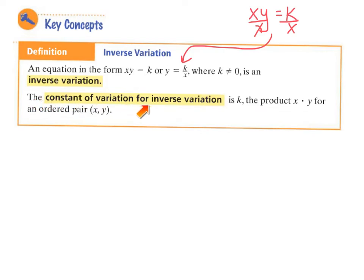The constant of variation for inverse variation is k. That is your constant. Notice in our activity, the total number of workdays is 160. That was constant. k is the product of x and y, which is part of an ordered pair x, y.